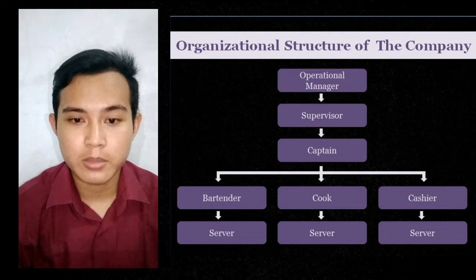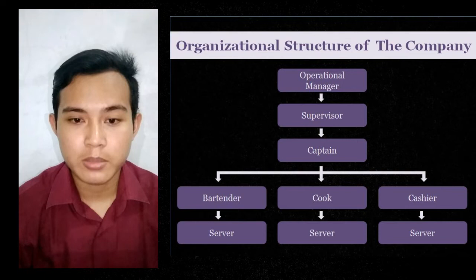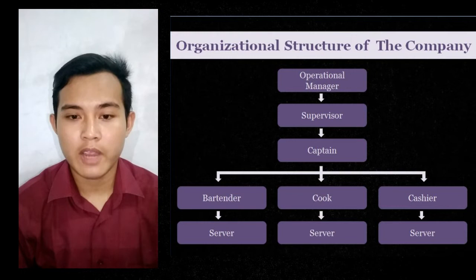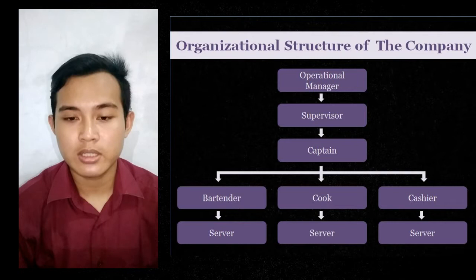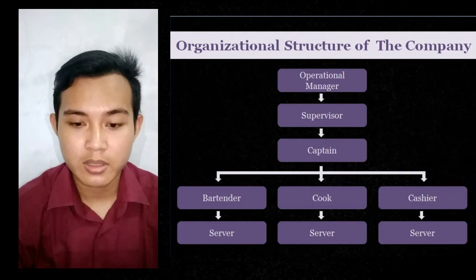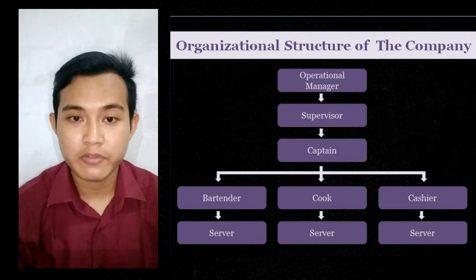In this slide I will give an explanation about the organizational structure of the company. Excelso has an organizational structure where the hierarchy is: operational manager, supervisor, captain, bartender, cooker, cashier, and server.